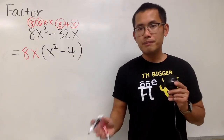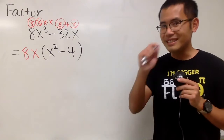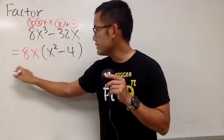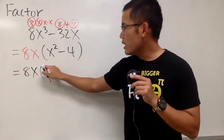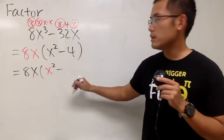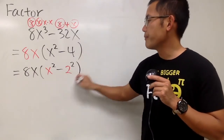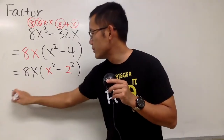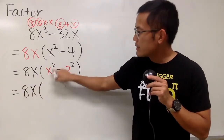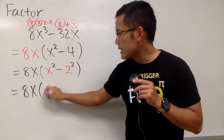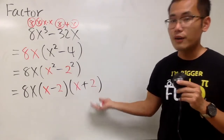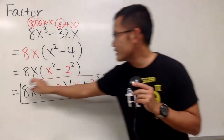We did the factoring already, but you have to ask yourself: can we do more? And the answer is yes, because x squared minus 4 is a difference of two squares. We still have the 8x in the front. x squared minus 4 can be written as x squared minus 2 squared, so we factor it as x minus 2 times x plus 2. This is the most we can do.